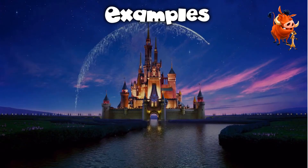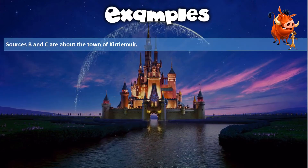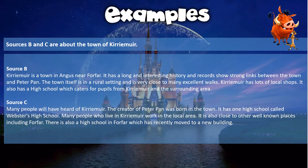Here are some examples. First, one out of the context of history — about the town of Kirriemuir. Source B says: 'Kirriemuir is a town in Angus near Forfar, it has a long and interesting history and records show strong links between the town and Peter Pan. The town itself is in a rural setting and is very close to many excellent walks. Kirriemuir has lots of local shops.'